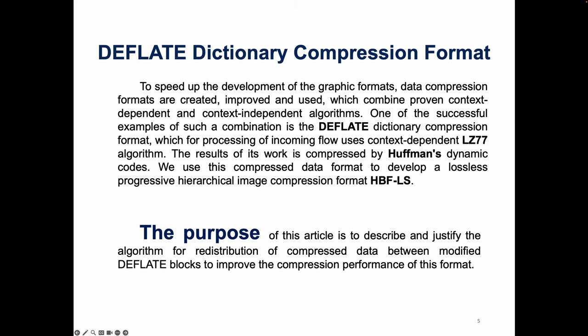To speed up the development of graphic formats, data compression formats are created, improved, and used, which combine proven context-dependent and context-independent algorithms. One of the successful examples of such a combination is the deflate dictionary compression format, which for preprocessing of the incoming flow uses the context-dependent LZ77 algorithm. The result of its work is compressed by Huffman's dynamic codes. We use this compressed data format to develop a lossless progressive hierarchical image compression format, HBFLS. The purpose of this article is to describe and justify the algorithm for the redistribution of the compressed data between modified deflate blocks to improve the compression performance of this format.